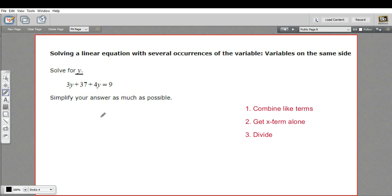Let me show you how that works. On the left side of this equation, we have like terms. We have 3y and 4y. Those can be added together. 3 plus 4 is 7, so that is 7y. And then we have plus 37 and equals 9. So that's combining the like terms.